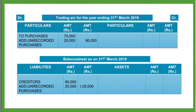In the trading account, on the debit side there will be an entry of purchases of 70,000, and in the balance sheet on the liability side, creditors of 85,000. Unrecorded purchases given in the adjustment need to be added into purchases as they were previously unrecorded. So we will add it into purchases and also add it into creditors. Thus this adjustment can be solved.